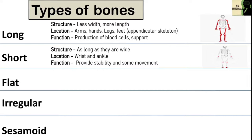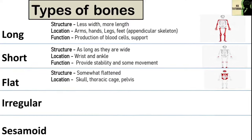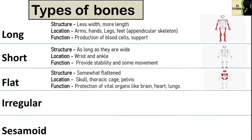Flat bones are somewhat flattened. They are found in the skull, the thoracic cage and in the pelvis. The function of flat bones is to protect internal organs such as the brain, heart and pelvic organs, providing protection like a shield. Flat bones can also provide large areas of attachment for muscles.